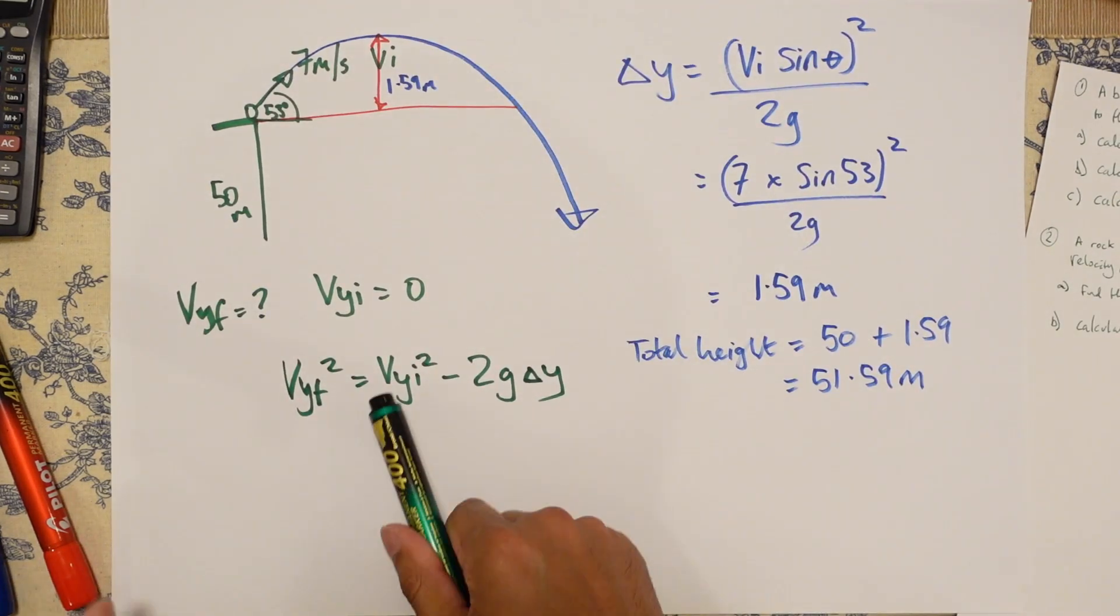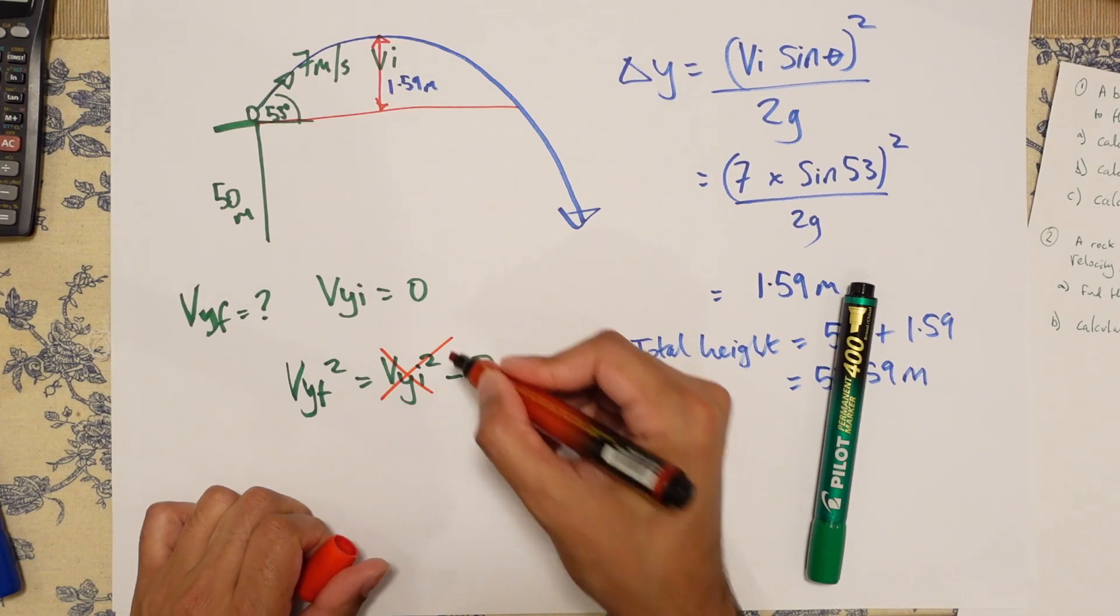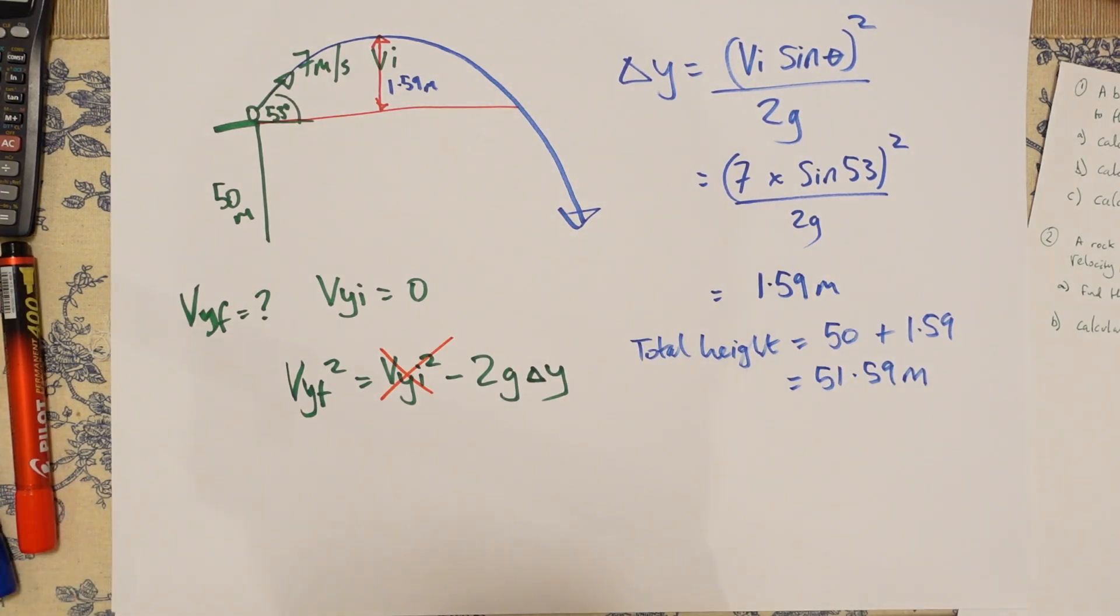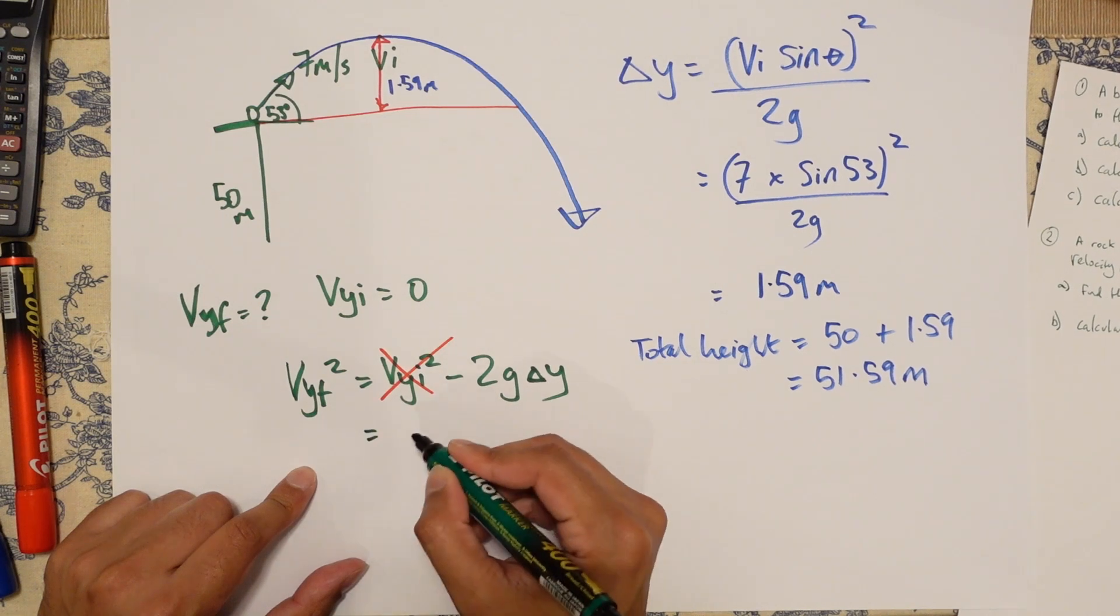Now, because VYI is zero, cancel it out. You've got VYF squared is equal to minus 2G delta Y. Let's work out what 2G delta Y is.